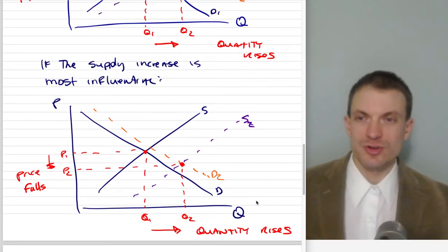What if supply is more influential? Now I'm going to show a small demand shift and a large supply shift. Think about this - it's going to flood the market and push the price down. We're going to get price falling and quantity rising.